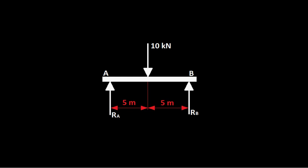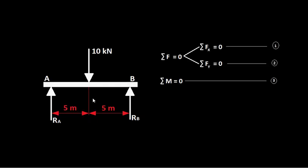Welcome back to support reactions. In the previous video we discussed the different kinds of supports, and in this video we are going to see the different kinds of loads and the effect of those loads on the supports. What we have here is a load of 10 kilo Newton acting on a beam of 10 meter length, with the load acting at mid span — five meters from either support. We need to find the reactions at A and B using the three conditions of equilibrium: forces in x, forces in y, and total moments equal to zero.